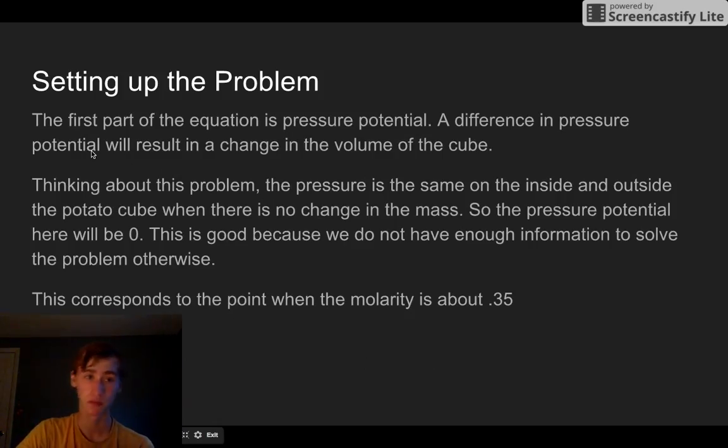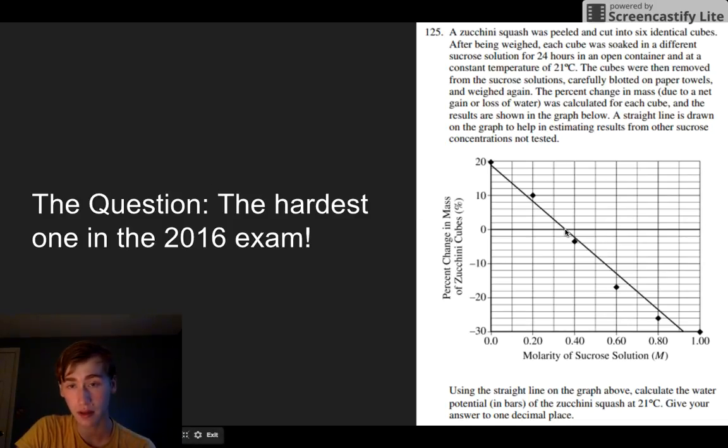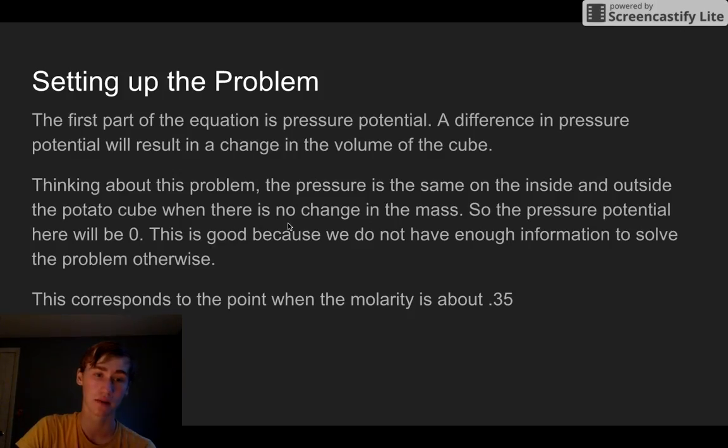A difference in pressure potential will result in a change in the volume of a cube. If the pressure is different inside and outside, then water will move one way or the other. The pressure will be the same on the inside and outside of the potato cube when there's no change in the potato cube's mass. If you look back at the graph, you see that occurs right here where the molarity is 0.35. That's what you're going to want to use for your molarity when you're calculating your solute potential.